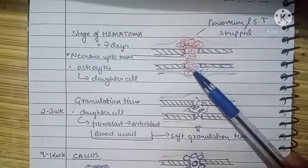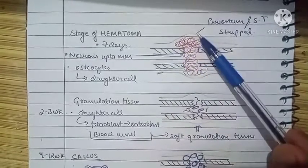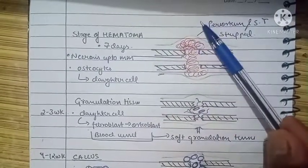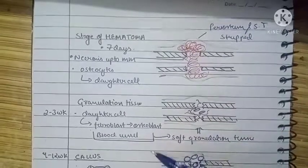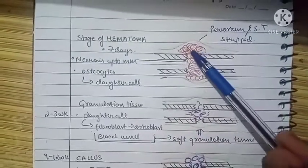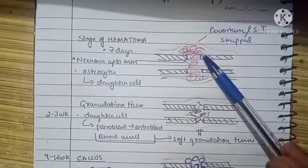Following a fracture, the periosteum is ripped apart at the site of fracture along with the soft tissue surrounding it. Blood starts collecting at the fracture site as well as the surrounding area. This is known as hematoma.